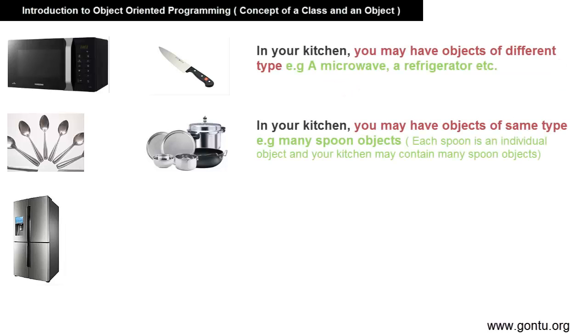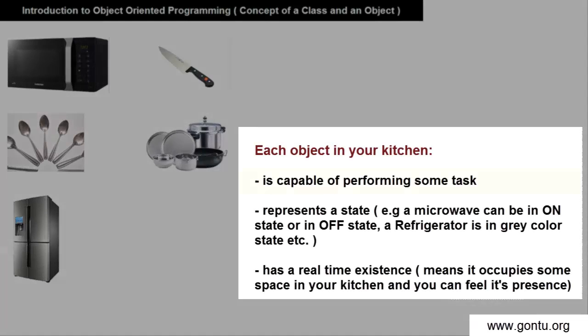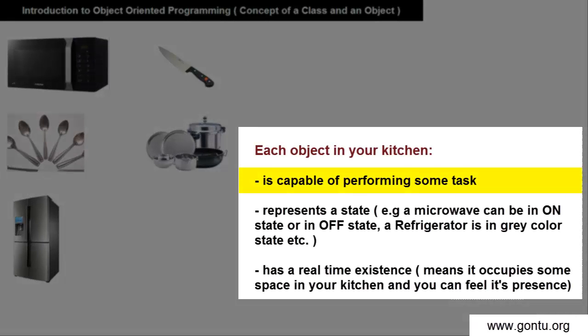In your kitchen, in addition to having objects of different types, you also have some objects which are of same type. For example, many spoons objects. Here the point to notice, each object in your kitchen is capable of performing some task, represents a state and has a real-time existence in your kitchen.